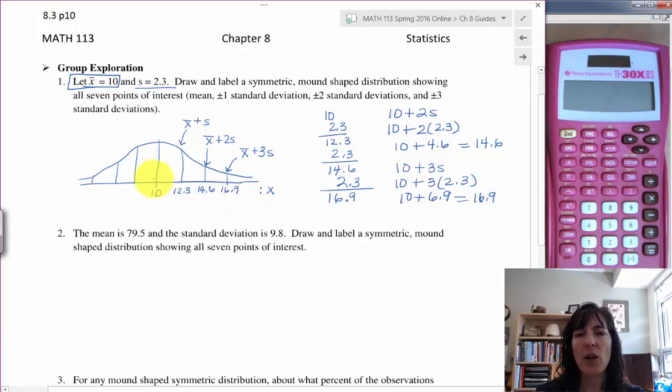So you might be wondering—and I hope you are—what about these values to the left? Well, here I took my mean and I added the standard deviation. For this one I will take my mean and I will subtract one standard deviation. Here I will take my mean and I will subtract two standard deviations, and here I will take my mean and subtract three standard deviations. Those are my formulas.